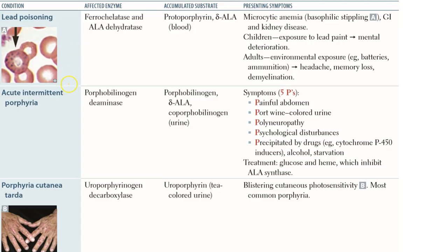The main porphyrias to know are acute intermittent porphyria and porphyria cutanea tarda. Lead poisoning can inhibit two enzymes — ferrochelatase and ALA dehydratase — which may cause microcytic anemia, kidney disease, and GI disease, and can affect the nervous system. In children, lead poisoning can cause mental retardation; in adults, demyelination and memory loss may occur. Acute intermittent porphyria is due to deficiency of uroporphyrinogen 1 synthase, also called porphobilinogen deaminase.